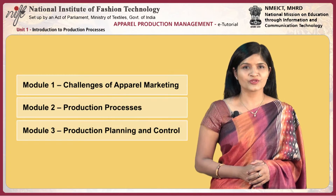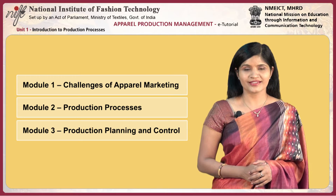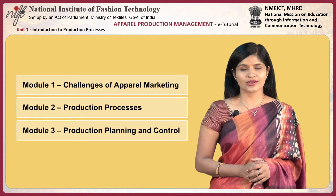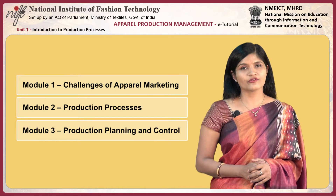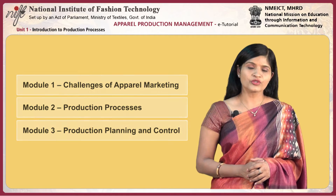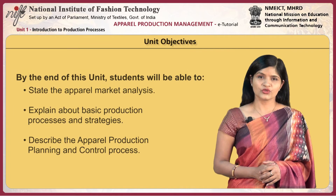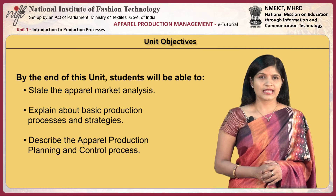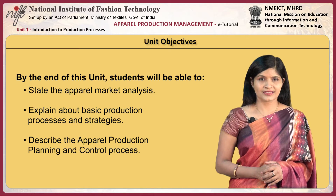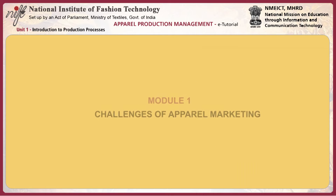Unit 1: Introduction to Production Processes. In this unit, you will understand the basic concepts of apparel production management. This unit comprises three modules and a final review section. By the end of this unit, students will be able to state the apparel market analysis, explain basic production processes and strategies, and describe the apparel production planning and control process.